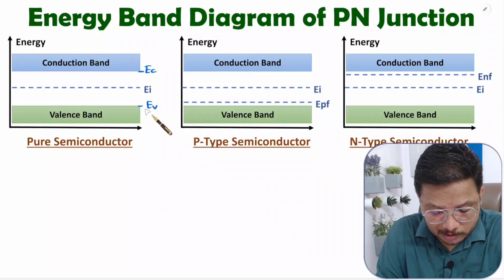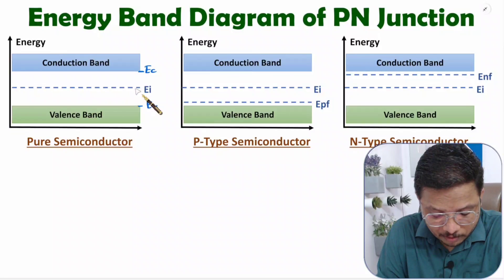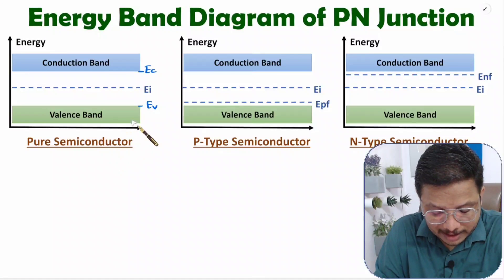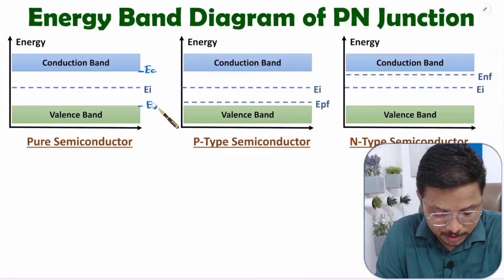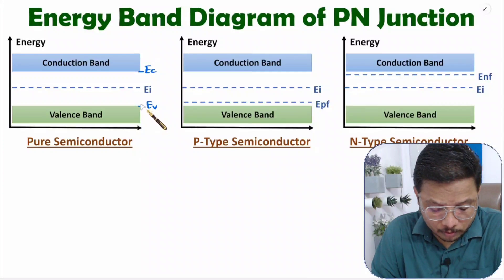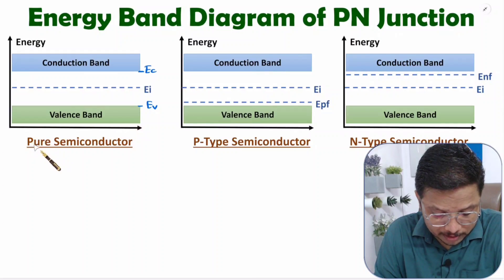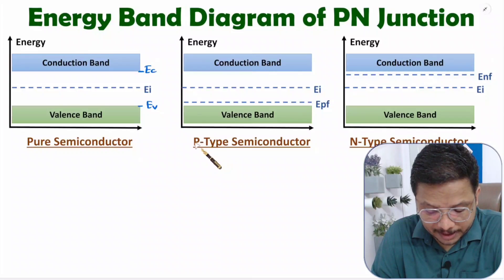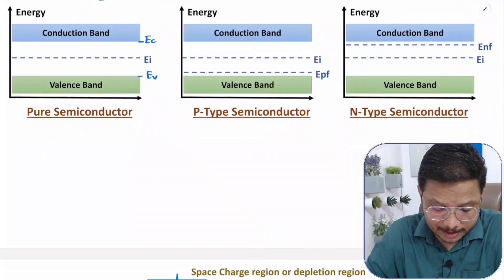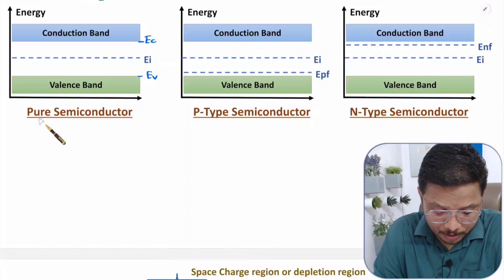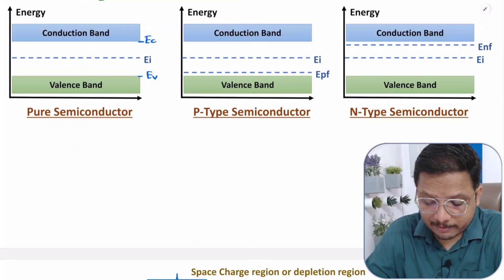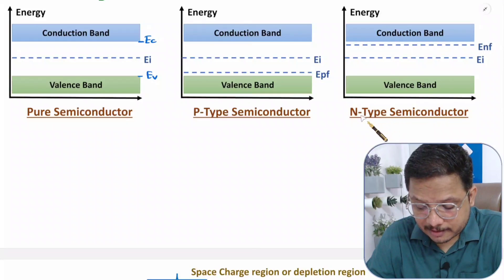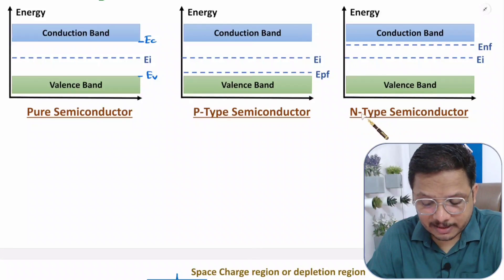So almost Fermi energy with pure semiconductor will be EC plus EV by 2. Now in pure semiconductor material, if you add trivalent impurities, then you will be making P-type semiconductor. And in pure semiconductor, if you add pentavalent impurities, then you will be making N-type semiconductor.